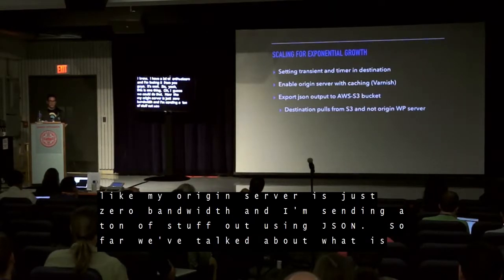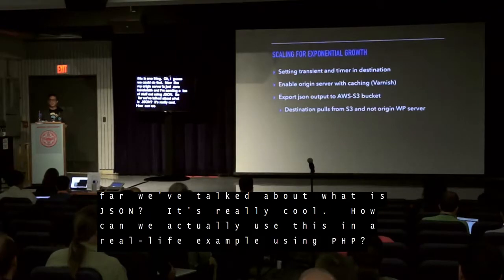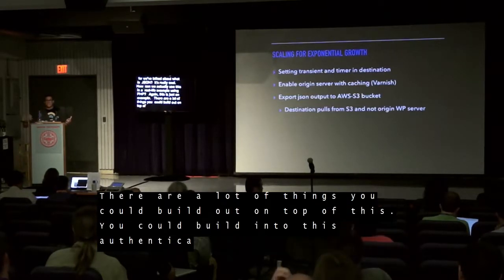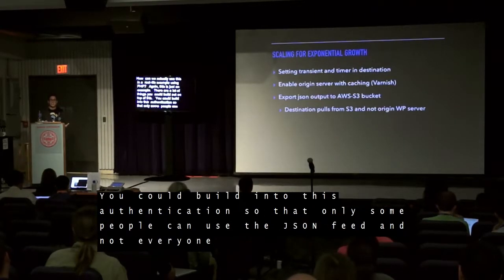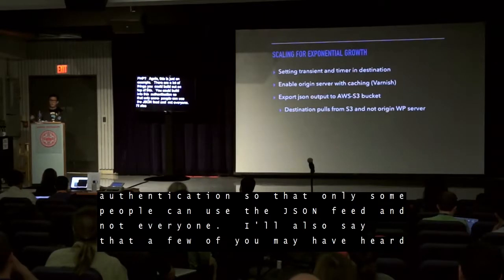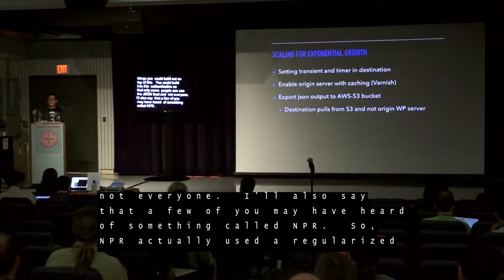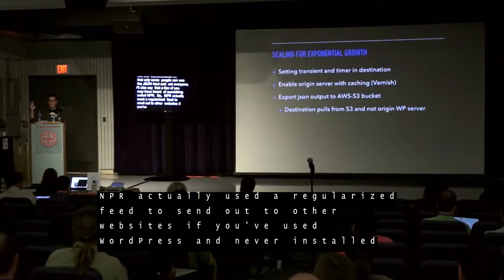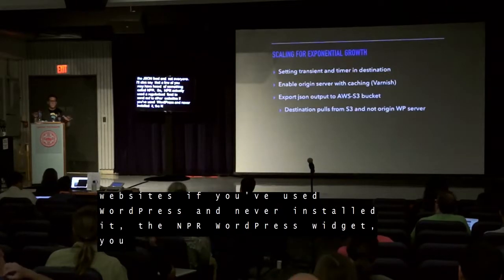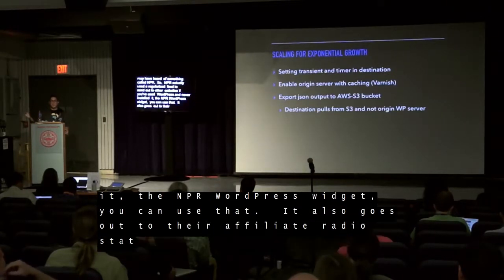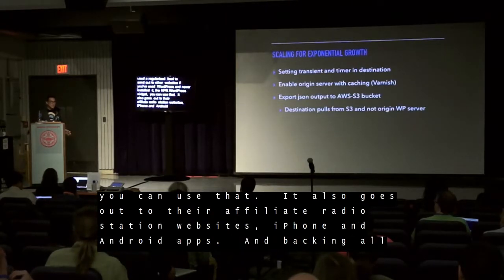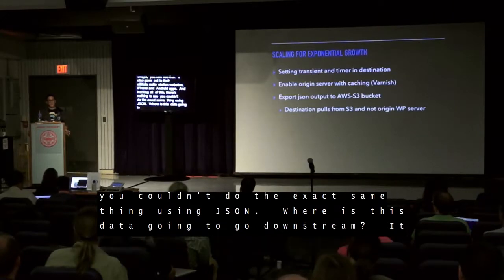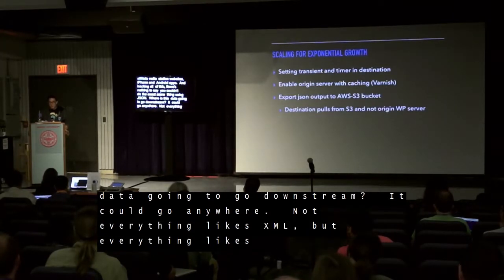So far we've talked about what JSON is, how to use it in a real-life example with PHP, and you could build on top of this — adding authentication so only some people can use the JSON feed. Also worth mentioning: NPR uses a regularized feed to send out to other websites. If you've installed the NPR WordPress widget, it goes out to affiliate radio station websites, iPhone apps, Android apps. There's nothing to say you couldn't do the same thing using JSON, because not everything likes XML, but everything likes JSON.